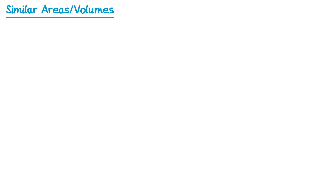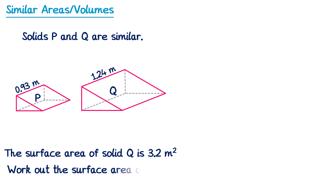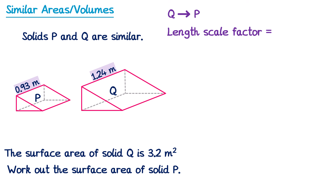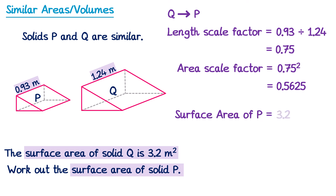Now let's try a question where it goes the other way. We have two similar shapes P and Q — the surface area of solid Q is 3.2 and we want to work out the surface area of solid P. We can see the corresponding lengths, so the scale factor going from Q to P is 0.93 divided by 1.24, which using a calculator is 0.75. Since we need a surface area, we square this: 0.75 squared is 0.5625. The surface area of P is therefore 3.2 multiplied by 0.5625, which using a calculator gives 1.8. So the surface area of P is 1.8 metres squared.